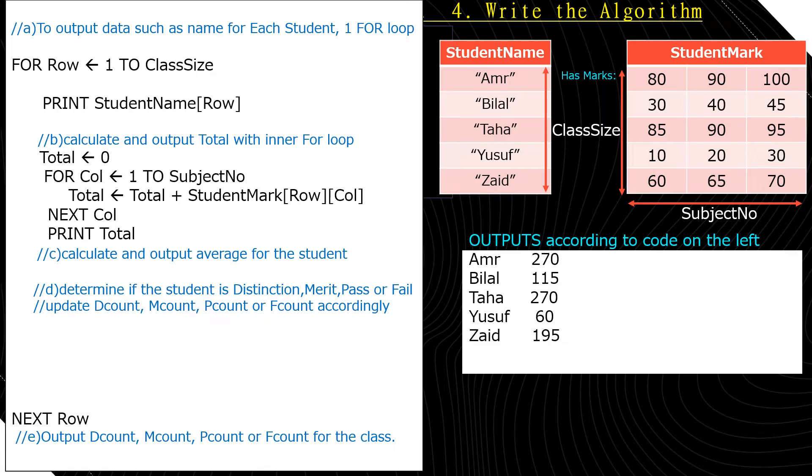Let's go ahead and do the next step. The next step B says we need to calculate and output the total for each student. Now, the total is going to be a for loop, which starts from subject number equals one, and then subject number equals two, until the total number of subject numbers. In this case, in our test data, we have three subjects. So we're doing a totaling algorithm. So a totaling algorithm, you're going to have to initialize total, and you're going to have a for loop for column from one to subject number. Total equals total plus student mark. Student mark is a two-dimensional array, so it takes row, comma, column. And finally, next column. At the end of this for loop, we'll have the total for that particular student, so we can print the total.